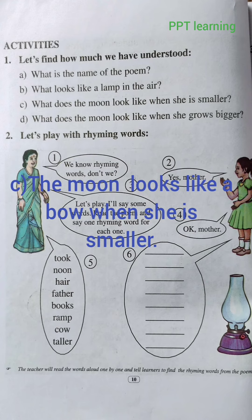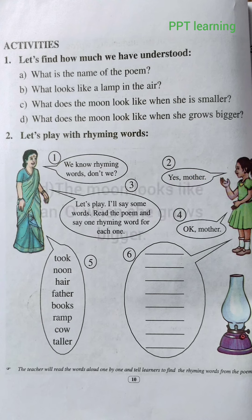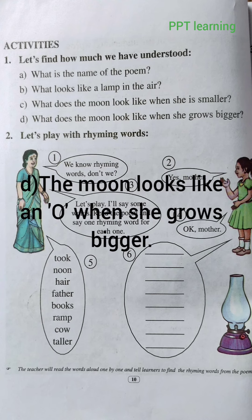Question No. 3. What does the moon look like when she grows bigger? She grows bigger — so she grows bigger. This is the answer.